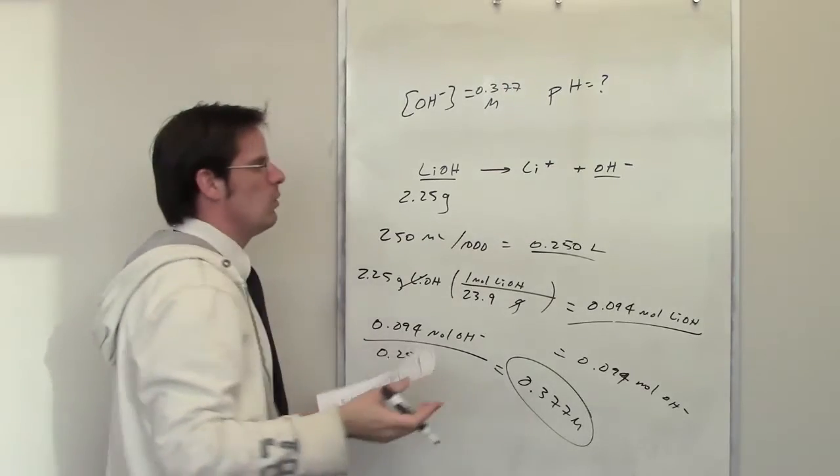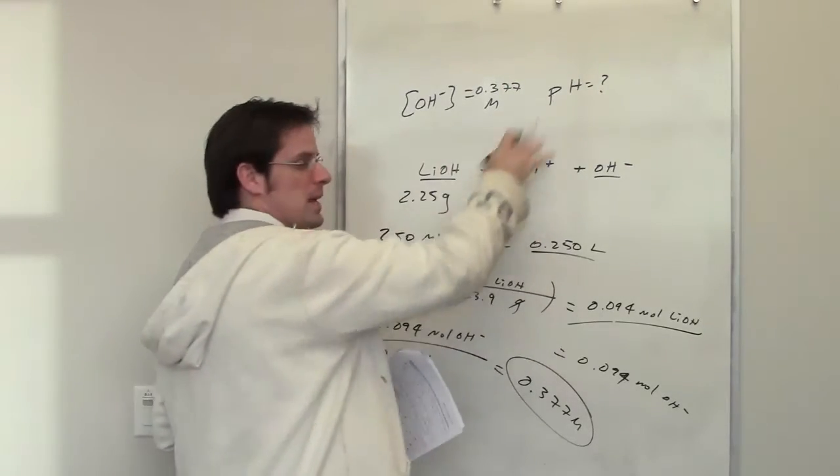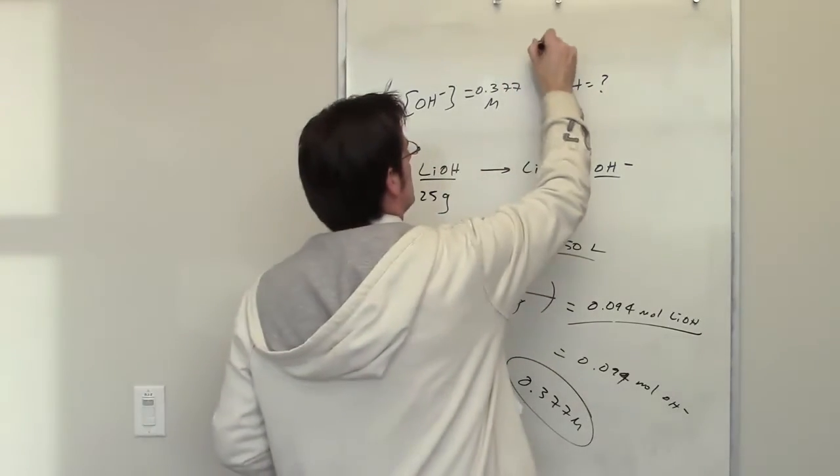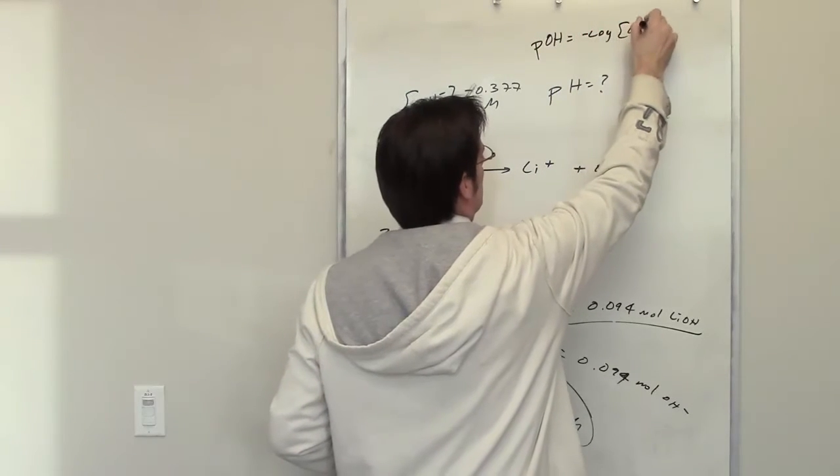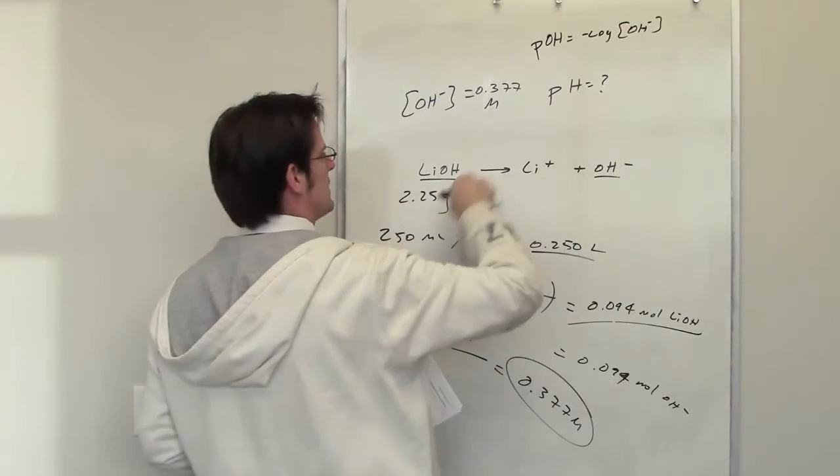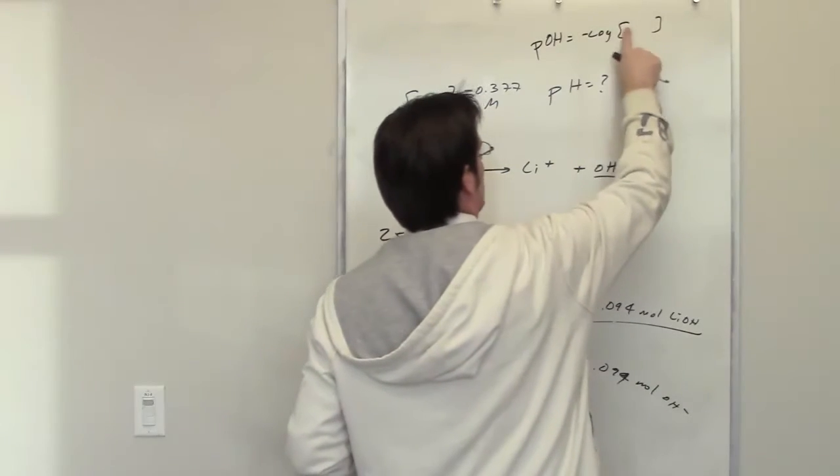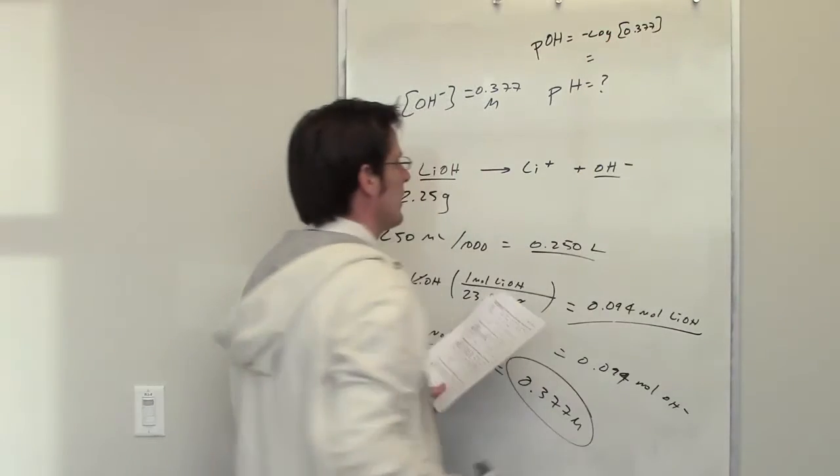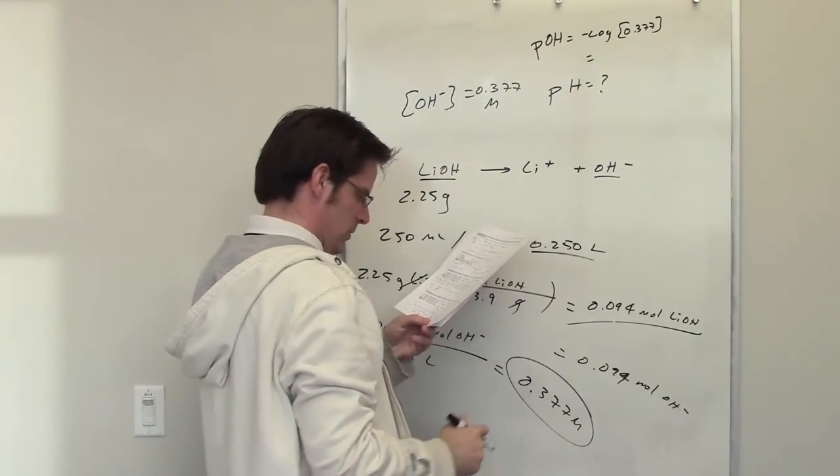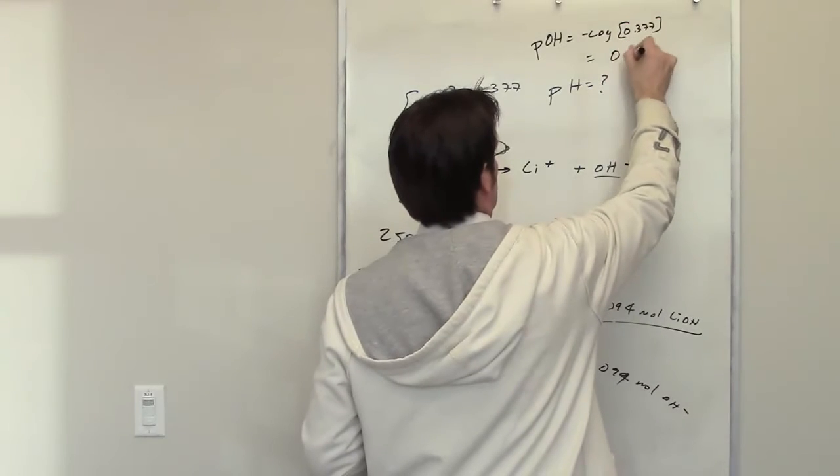What's the pH? Once again, I'm going to get to pH by going through pOH. pOH equals the negative log of the hydroxide concentration. I can replace that with my actual number, 0.377. I throw that into my calculator and the pOH equals 0.424.